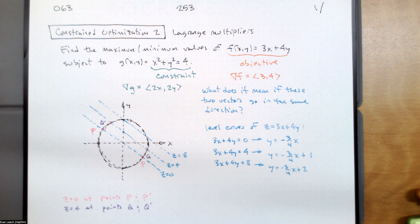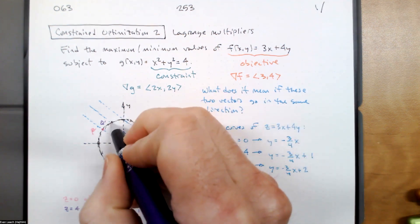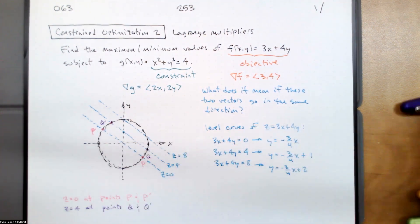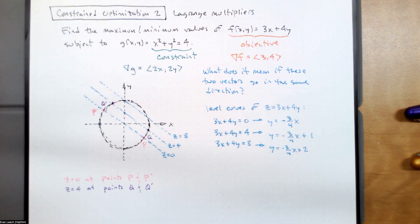We can do better than that — we can get a higher value. If I go up to another level curve where z = 4, I get y = -¾x + 1. At the points q and q prime, we have a value of z = 4. But can we do better? Yes. The next one we drew was yet another level curve where z = 8.